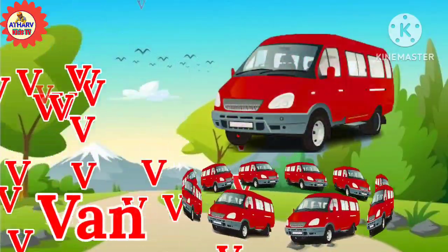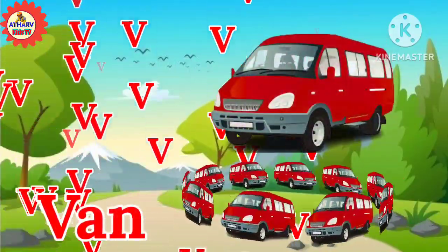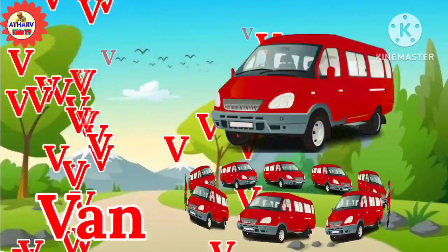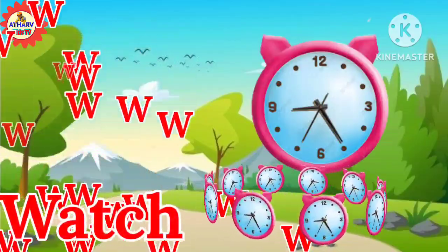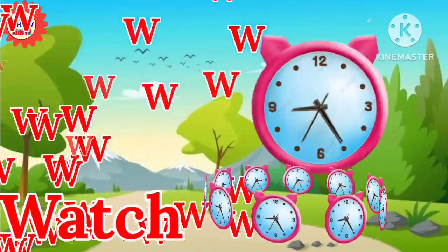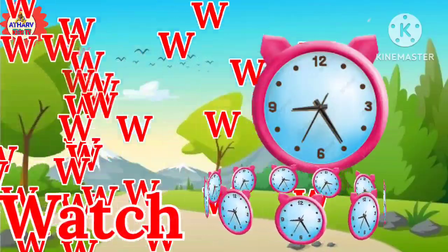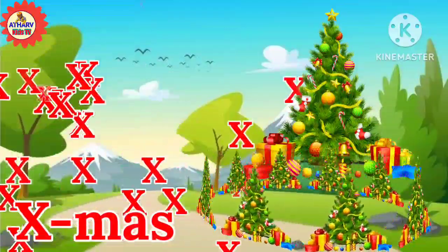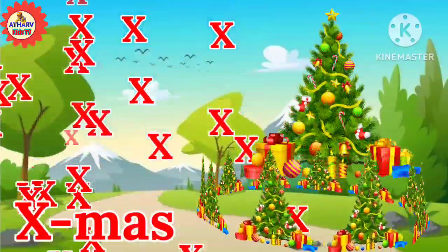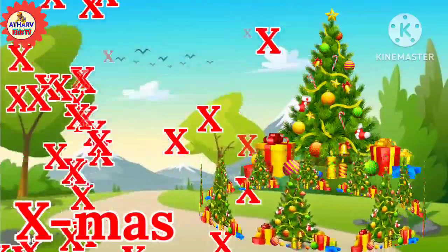U for umbrella, V for van, W for watch, X for Xmas.